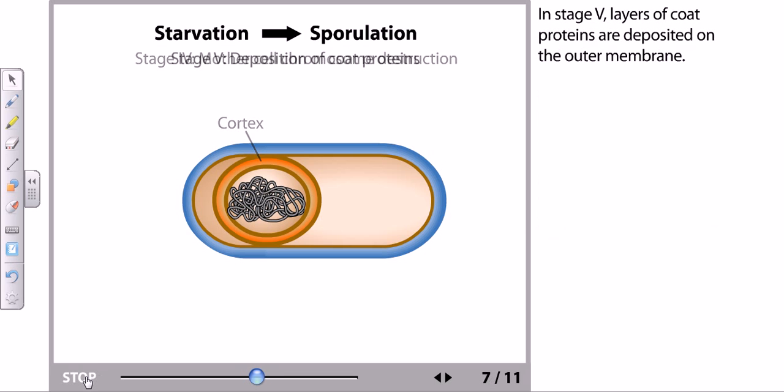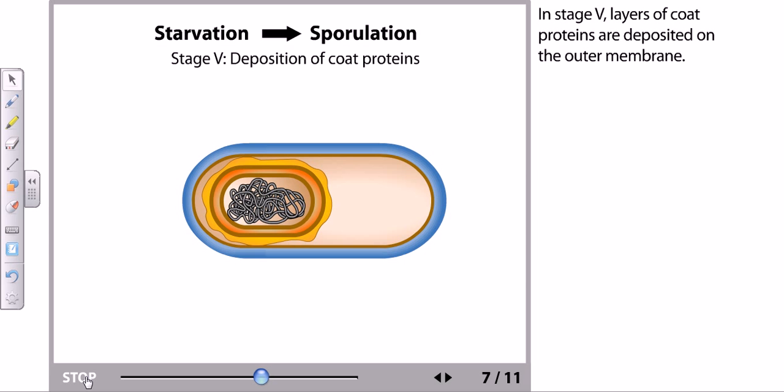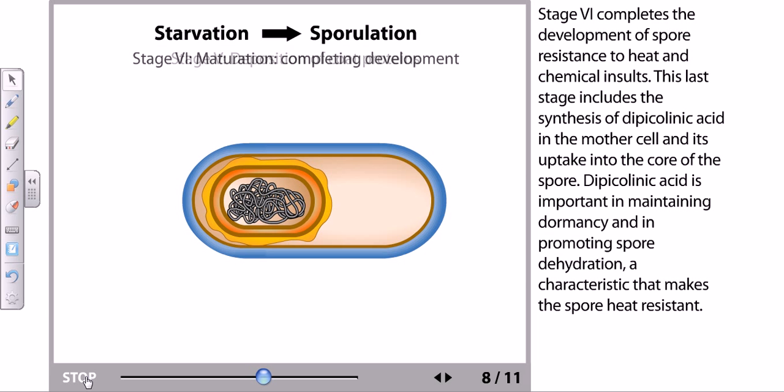In stage 5, layers of coat proteins are deposited on the outer membrane. As you can see here, in stage 6 completes the development of spore resistance to heat and chemical insults. This last stage includes the synthesis of dipicolinic acid in the mother cell and its uptake into the core of the spore. This dipicolinic acid is important in maintaining the dormancy and in promoting spore dehydration.